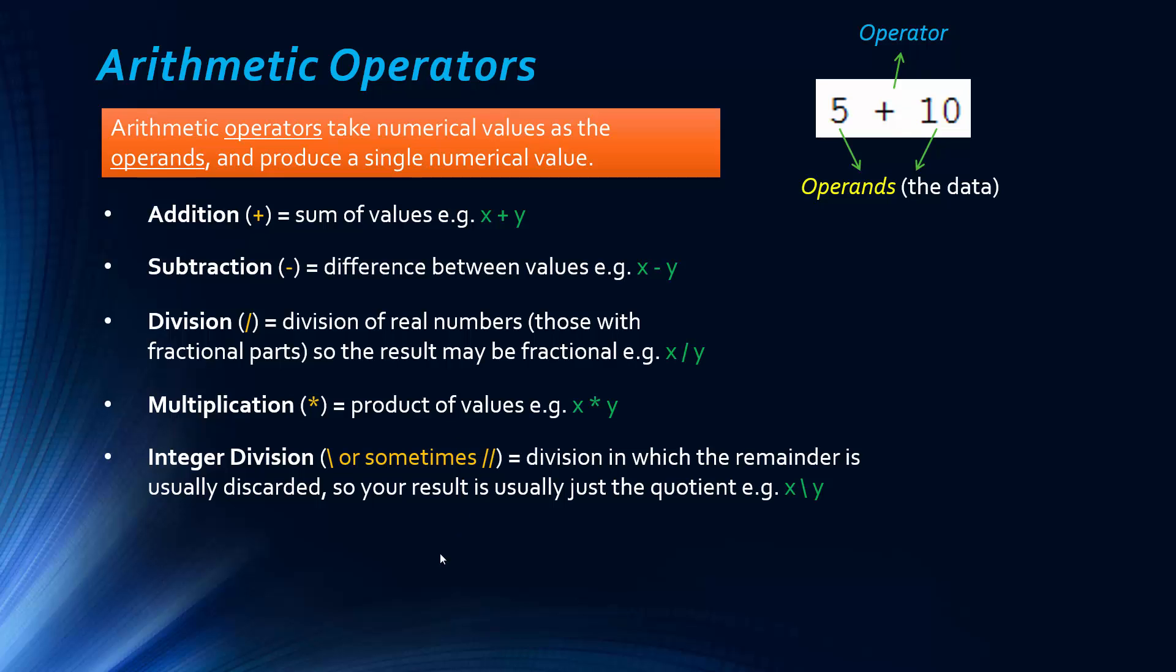Integer division is different in the sense that you just get an integer back. So you get the quotient, and the remainder is usually discarded. It does vary a little bit into the division language to language. And in some languages it's done more implicitly. So if the operands are both integers, you'll just have the integer division. If one of them is a float, you'll get normal division.